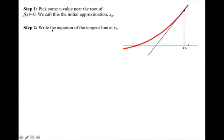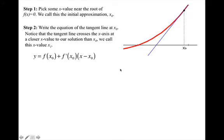Step two is to write the equation of the tangent line at x₀. So in this case it's going to be y = f(x₀) + f'(x₀)(x - x₀).